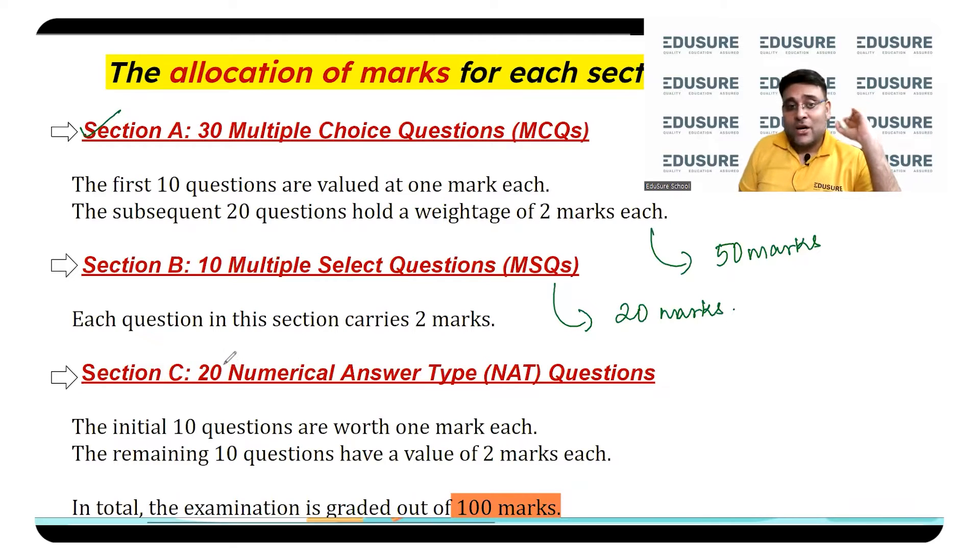Section C has 20 questions, NAT type. You need to enter the answer - they will give you a blank, and in the blank you will have to enter the answer. This is basically 10 questions one mark, 10 questions two marks, so this is 30 marks.